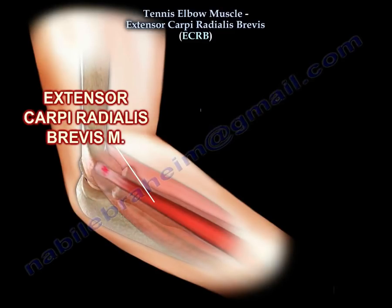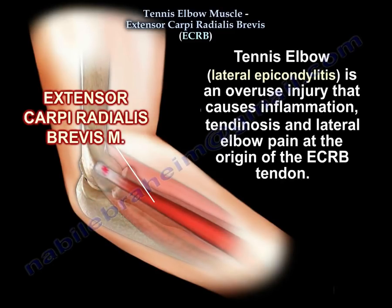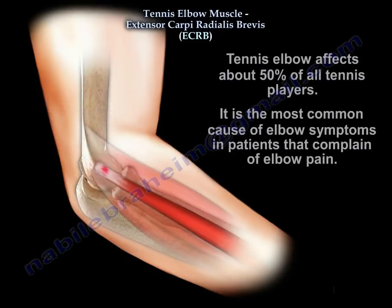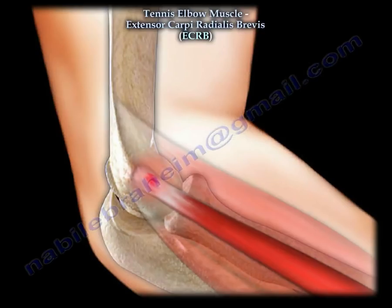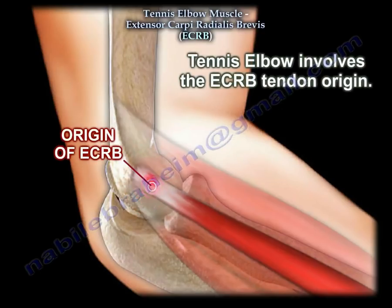Tennis elbow is called lateral epicondylitis. It is an overuse injury that causes inflammation, tendinosis, and lateral elbow pain at the origin of the extensor carboidialis previs tendon. It affects about 50% of all tennis players, and it is the most common cause of elbow symptoms in patients that complain of elbow pain. Tennis elbow involves the extensor carboidialis previs tendon origin.